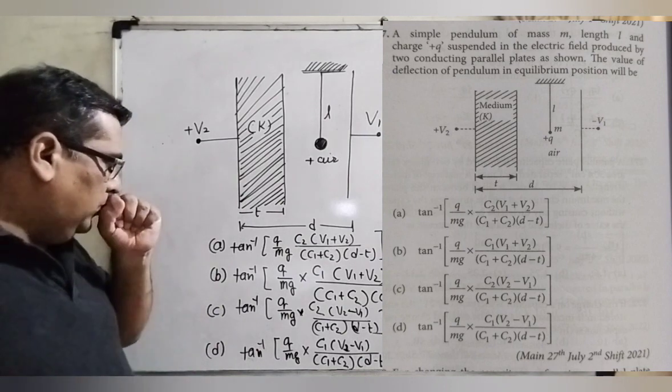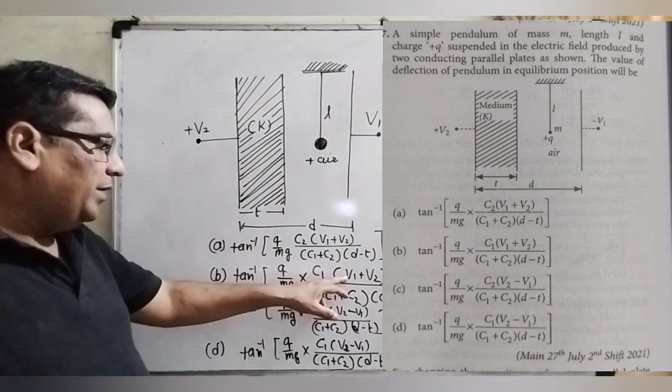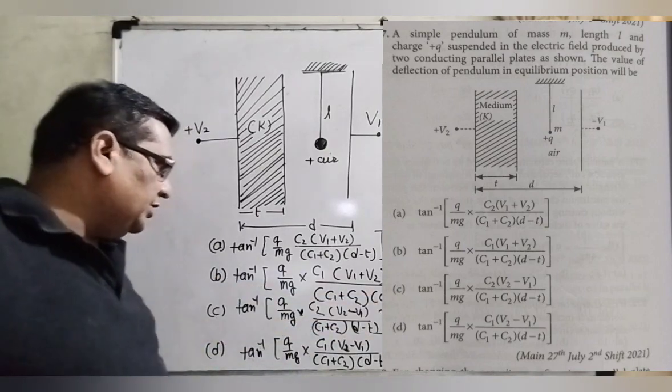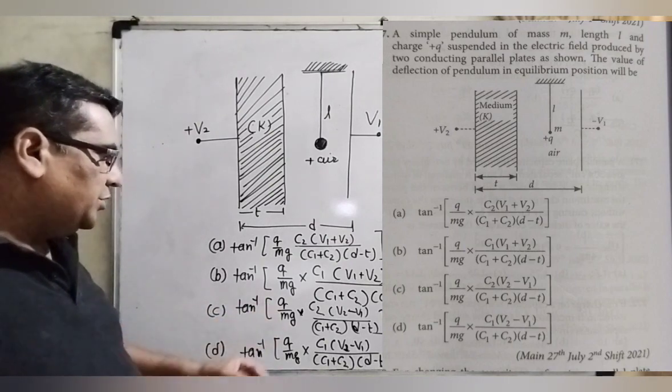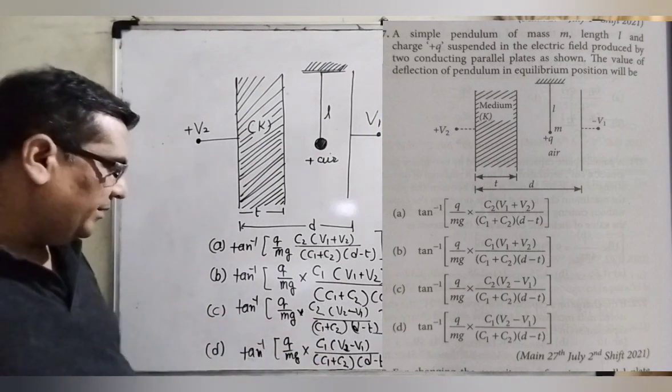Second option: tan inverse Q by mg into C1 into bracket V1 plus V2 upon C1 plus C2 into bracket D minus d. Third option: tan inverse Q by mg, C1 into bracket D minus d.